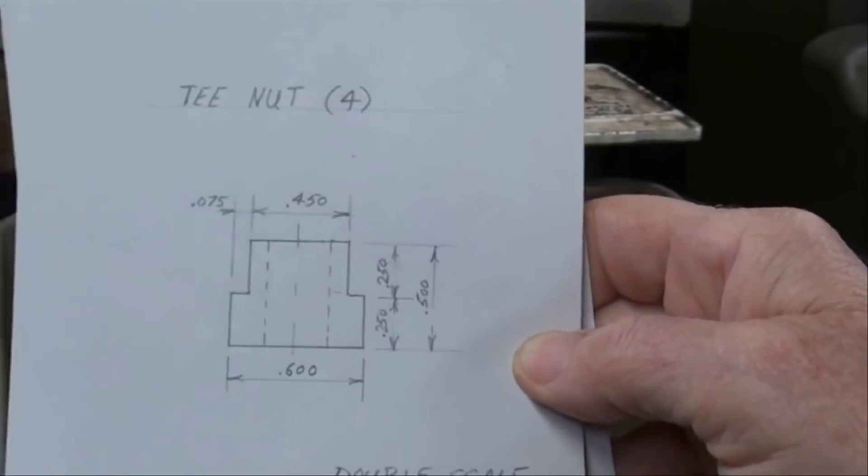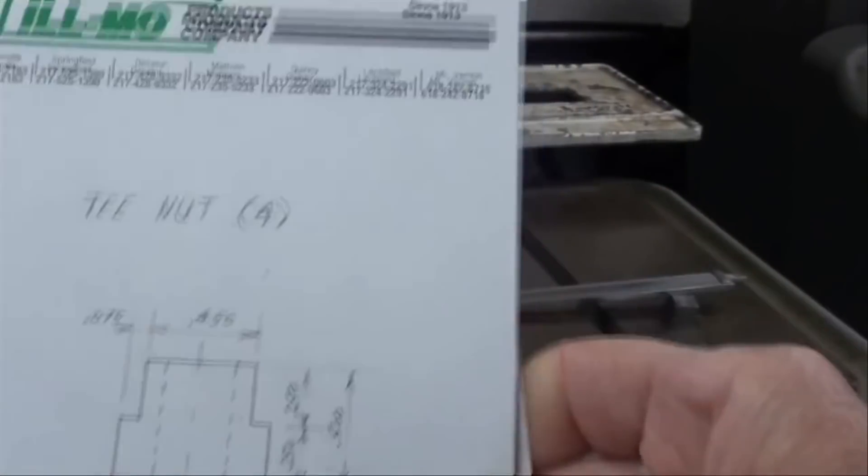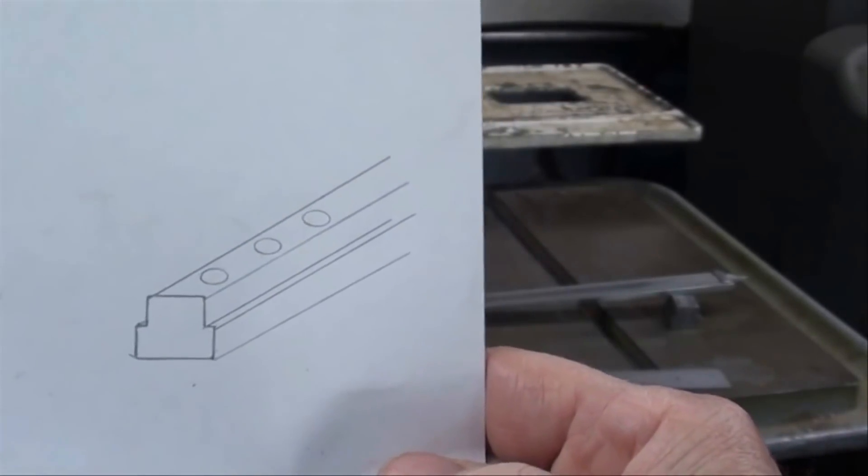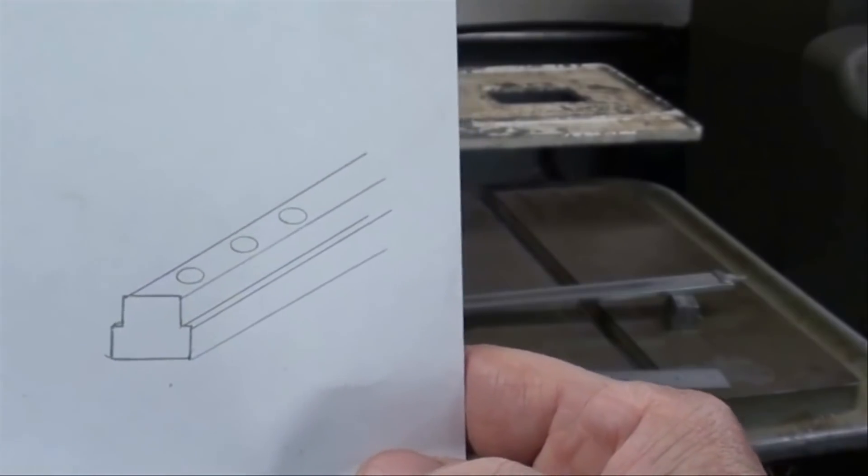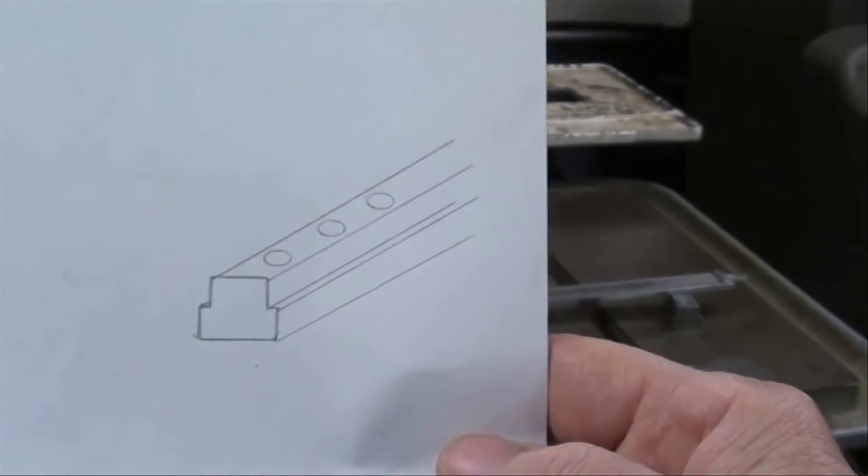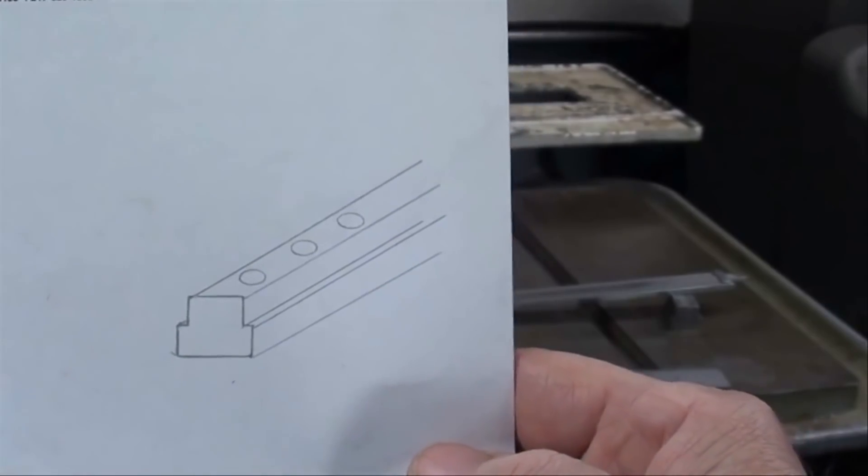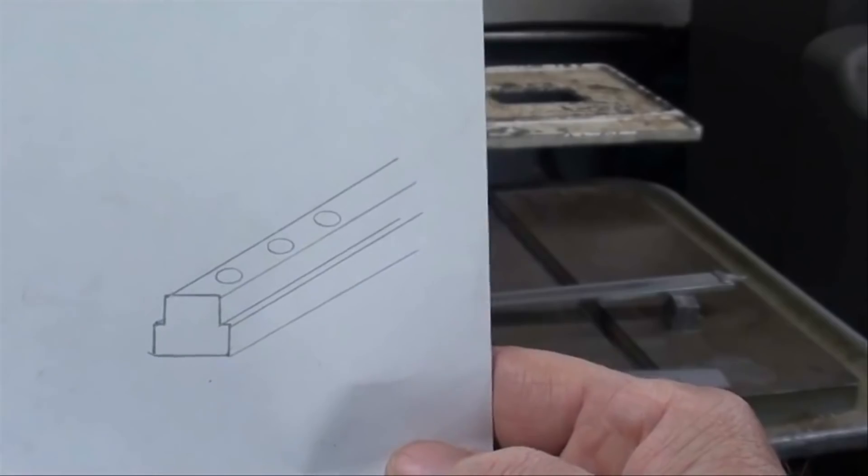This particular little sketch is double scale, but I'm going to make all five of them at one time as shown in this drawing. It's much easier to handle a large piece than a small piece, so I'll mill the full length of the piece so it looks something like this and then chop it off to length.